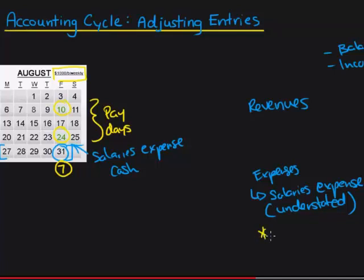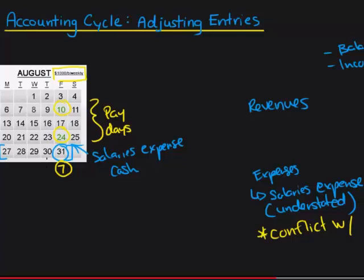This will also cause a conflict with the matching principle. The matching principle means that the revenues earned throughout August should be matched with all of the expenses that generated those revenues. So if we earn revenues every week in August but don't show the last week of expenses, we're not matching all revenues earned with the expenses incurred. We need to show all expenses for the month of August.